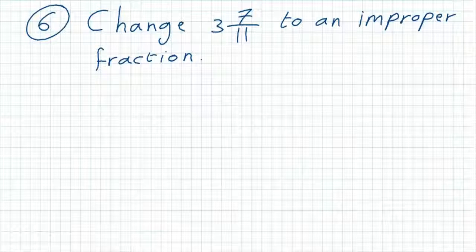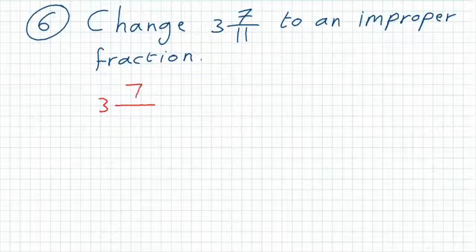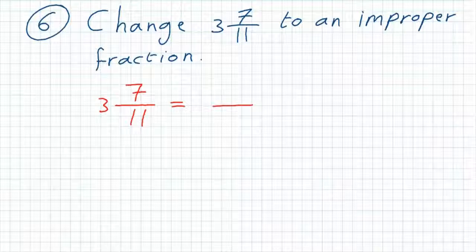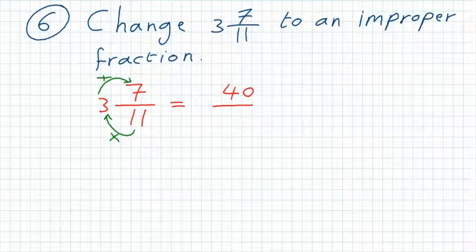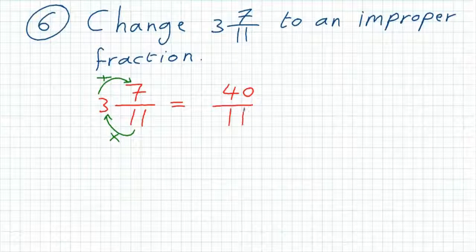Multiply the denominator with the whole number beside the fraction, then add the result to the numerator. So 11 times 3 is 33. 33 plus 7 is 40. And keep your denominator the same, don't change it.